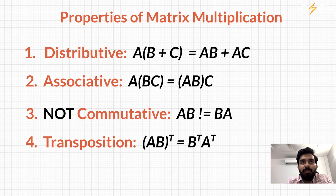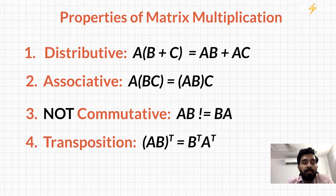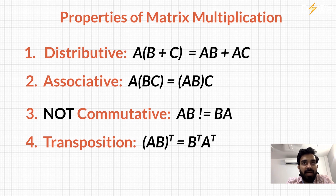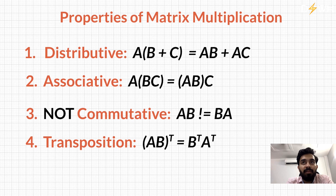Let's talk about the properties of matrix multiplication. First, it is distributive: A×(B+C) = AB + AC. Second, it is associative: A×(B×C) = (A×B)×C. Third, matrix multiplication is not commutative: A×B does not generally equal B×A, because the shape rule for columns and rows may not be satisfied in both directions.